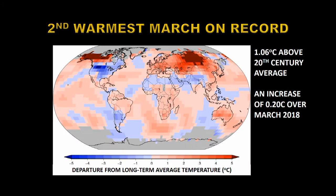Let's map out where the temperature differences occur to make March of 2019 the second warmest March on record. There was one area of very cold weather across the northern tier states of the United States. However, to more than compensate for that, there were two areas of exceedingly high temperatures across Alaska and northern Canada and in Siberia. We also had warm weather in southern Africa and in Australia. Lastly, we have a well-formed El Niño off the west coast of South America.